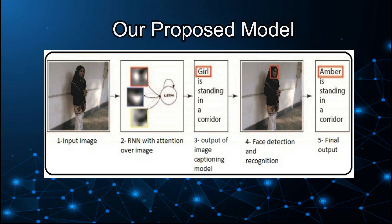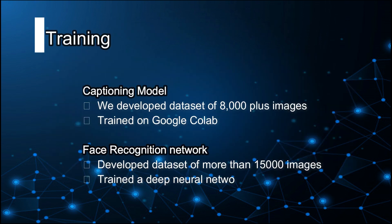To recognize a person present in the image and ensure proper captioning, we trained our neural network to recognize the face of the person and modify the generated sentence accordingly. For example, a sentence like 'a girl is standing in the corridor' will be changed to 'Ember is standing in the corridor.'